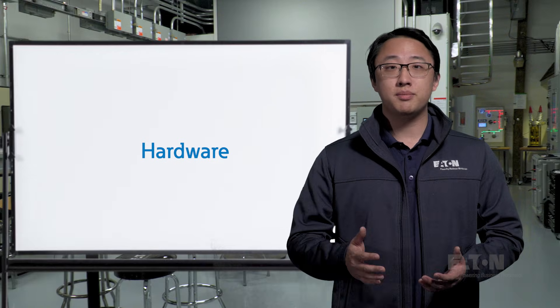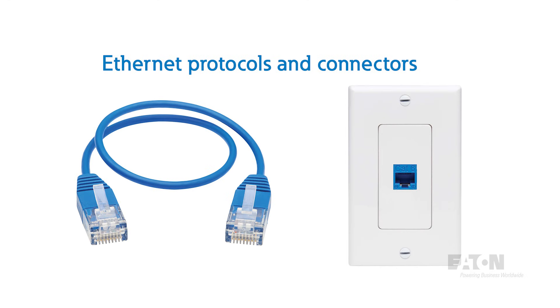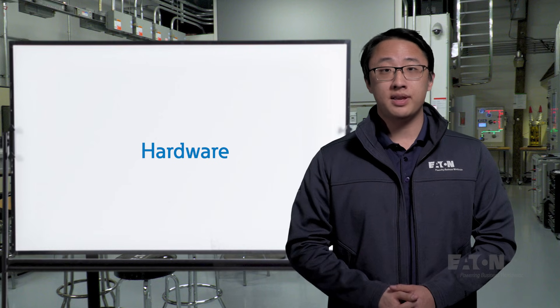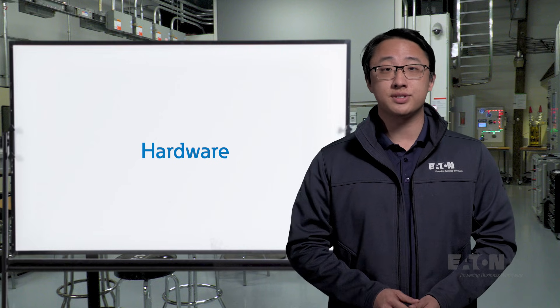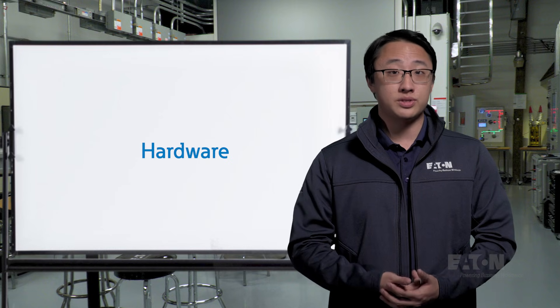Some common communication cables you've probably seen before are RS-232 and DB9, but these are being steadily replaced by Ethernet due to serial protocols being gradually phased out. However, there's still a healthy amount of each type, and it can be helpful to get an idea of how a system works merely by looking at what physical connections are in use.